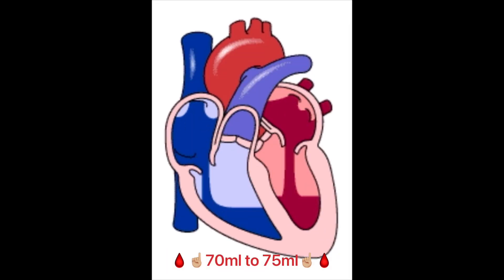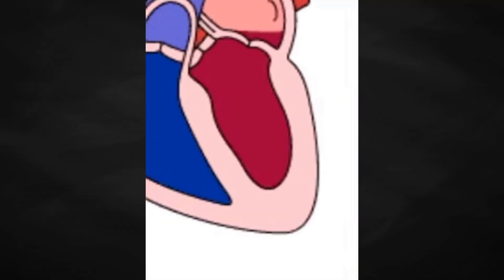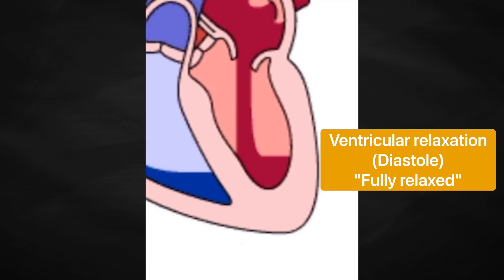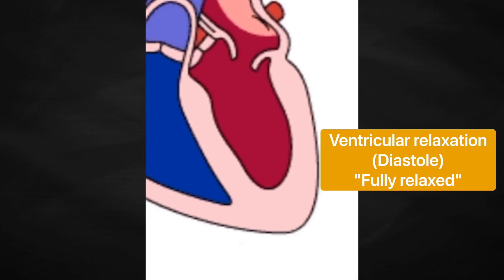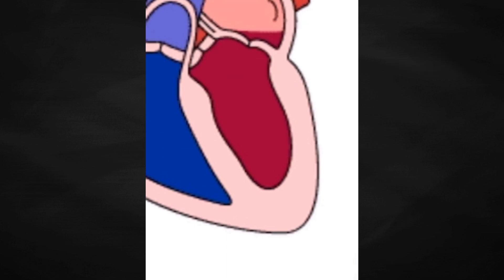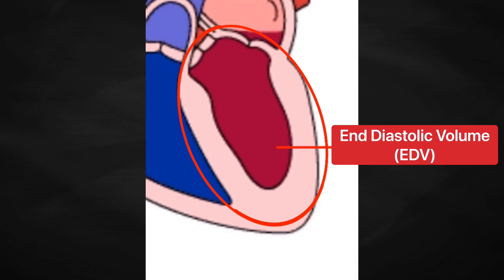Now let's enter into the left ventricle. There is a time when the left ventricle is fully relaxed. It occurs at the end of filling or diastole, also called the end-diastolic point. The volume of blood within the left ventricle at this point is called end-diastolic volume and it's about 120 ml.